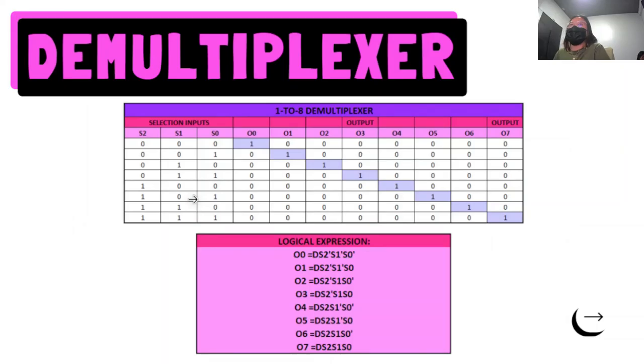Next, for the demultiplexer, we have this table. As you can see here, we have now three selection inputs. And these are the outputs.